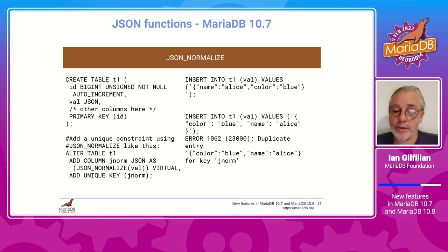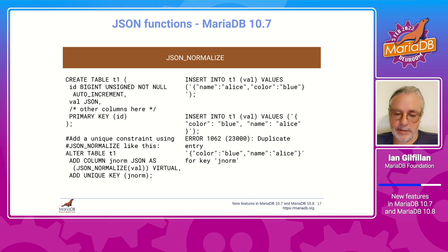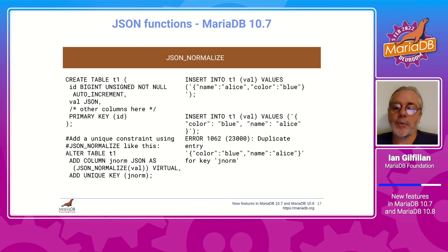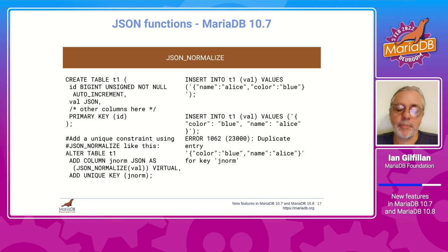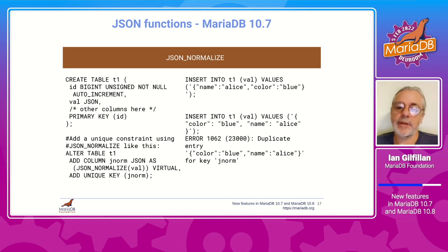The other function is JSON_NORMALIZE, which is used internally by JSON_EQUALS to check for equality — it recursively sorts keys and removes spaces. A possible use case is adding a unique constraint using JSON_NORMALIZE. You define a unique key on a normalized field, and when you insert an object with keys in one order (alice, blue) and then try to insert the same object with keys in a different order (blue, alice), normalizing makes them identical and you get a duplicate entry error.